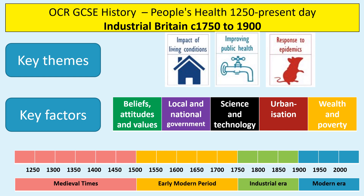Hello there, welcome to this GCSE history revision video on people's health 1250 to the present day. This video focuses on industrial Britain, around 1750 to 1900. The key themes you need to know for people's health are: impact of living conditions, improving public health, and response to epidemics.